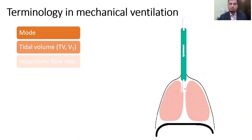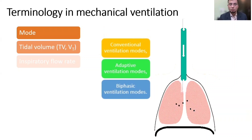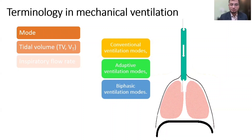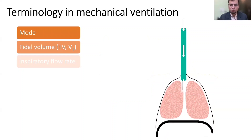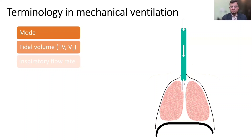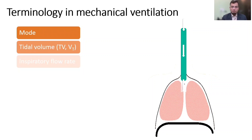You need to set a mode — the way the ventilator delivers a breath to the patient. It indicates the type of breath being delivered and how breaths are triggered, controlled, and cycled. Modes may belong to one of three categories: conventional or basic modes, adaptive ventilatory modes, or biphasic ventilatory modes. Tidal volume is the volume delivered in each breath and needs to be set in volume-controlled ventilation. Excess tidal volume can lead to barotrauma and lung injury; therefore 5 to 6 ml per kg of predicted body weight is set in patients with hypoxemic respiratory failure. In other patients, higher tidal volume up to 8 to 10 ml per kg of predicted body weight may be set depending on lung compliance.